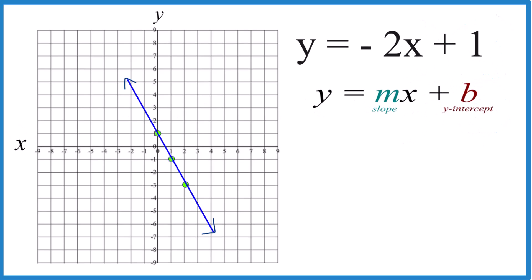So y-intercept is one, we go to the y-axis down to one, that's where we should cross and it is.